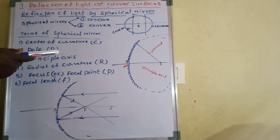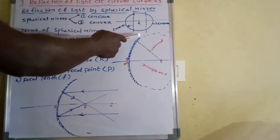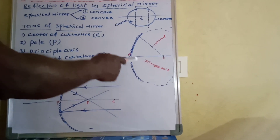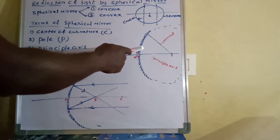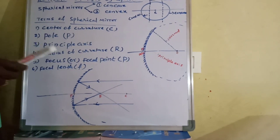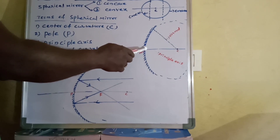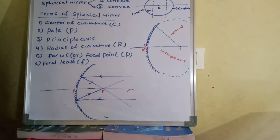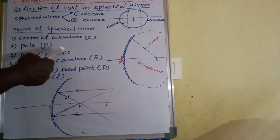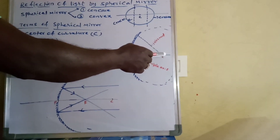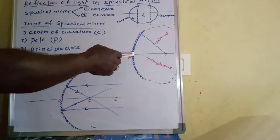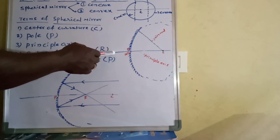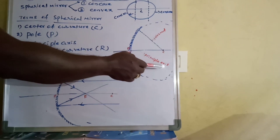Next term: pole. The midpoint of the mirror, or the geometrical center point of the mirror, is called the pole. Here, on the concave mirror, this midpoint is the peak called the pole. Next term: principal axis. The horizontal line passing through the center of curvature to the pole is called the principal axis.